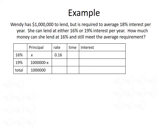Next we'll fill in the interest rates: 16% for the first row, 19% for the second row, and 18% for the total. We weren't given any time in the problem, so let's assume this happens in one year and put ones in for all of the times. Now we'll compute the overall interest. For 16% interest, we multiply the principal times the rate to get 0.16X. At 19% interest, that gives us 0.19 times 1 million minus X. And for the total, 1 million times 0.18 simplifies to 180,000.